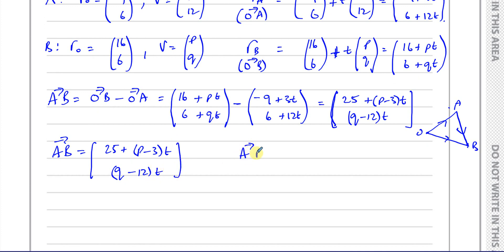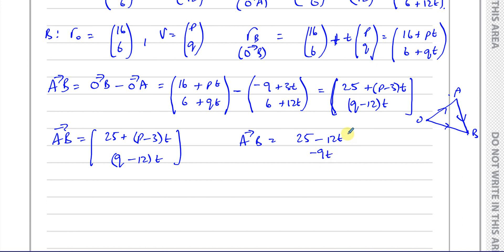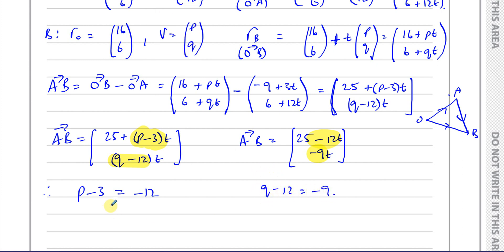Now I know my derived vector A to B is (25 + (P − 3)t, (Q − 12)t). I also know the given vector A to B is (25 − 12t, −9t). Comparing the i components: P − 3 must equal −12, so P = −9. Comparing the j components: Q − 12 must equal −9, so Q = 3. Those are the values of P and Q — the answer to part B.